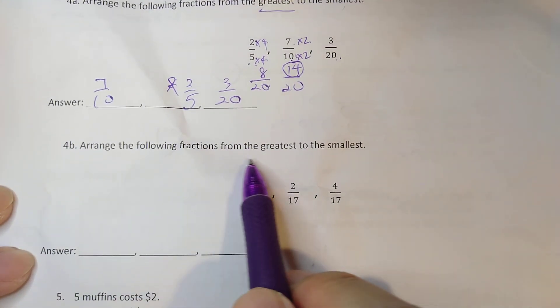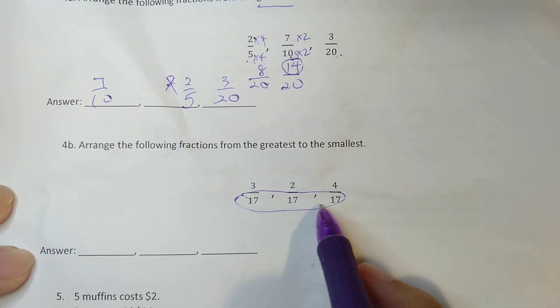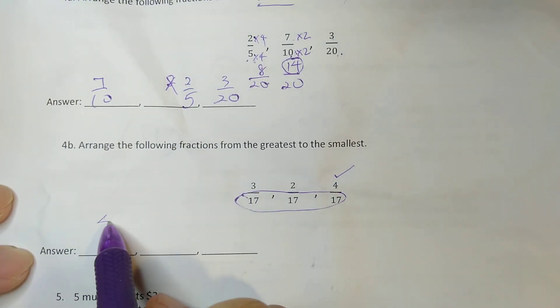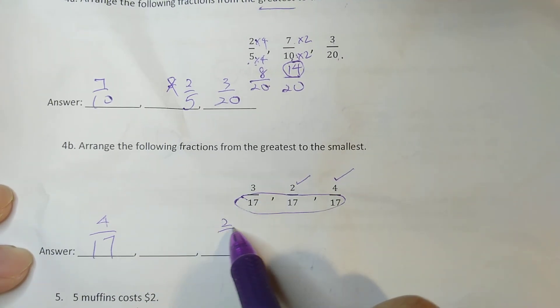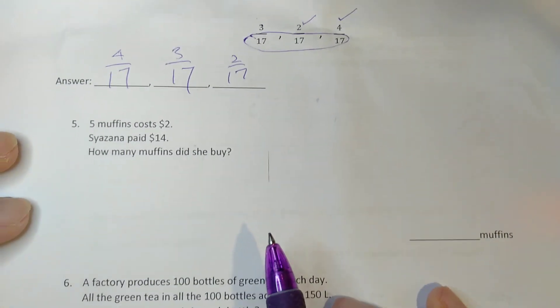Arrange these fractions from greatest to smallest. Now this, I have already given you the denominator. So it's easier to compare. Greatest with the largest number. This one is your 4, 17. Smallest is your 2, 17. This is in the middle. Next one.